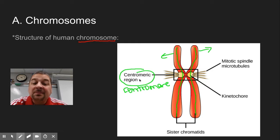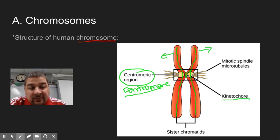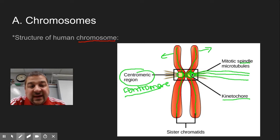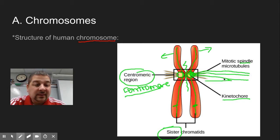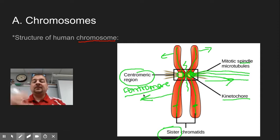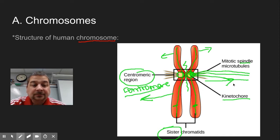The centromeric region is what holds these two duplicated strands of DNA together. In that centromeric region, we also have what's called a kinetochore — little attachment spots where the spindle fibers are going to reach across from each end of the cell during mitosis and attach. So when the centromere splits, the spindle fibers can pull these chromosomes — these sister chromatids, because they are exactly the same genetically — pulling one to one end of the cell and the other to the other end. When the cell splits in mitosis into two new cells, you have an exact copy of those genes in each cell.